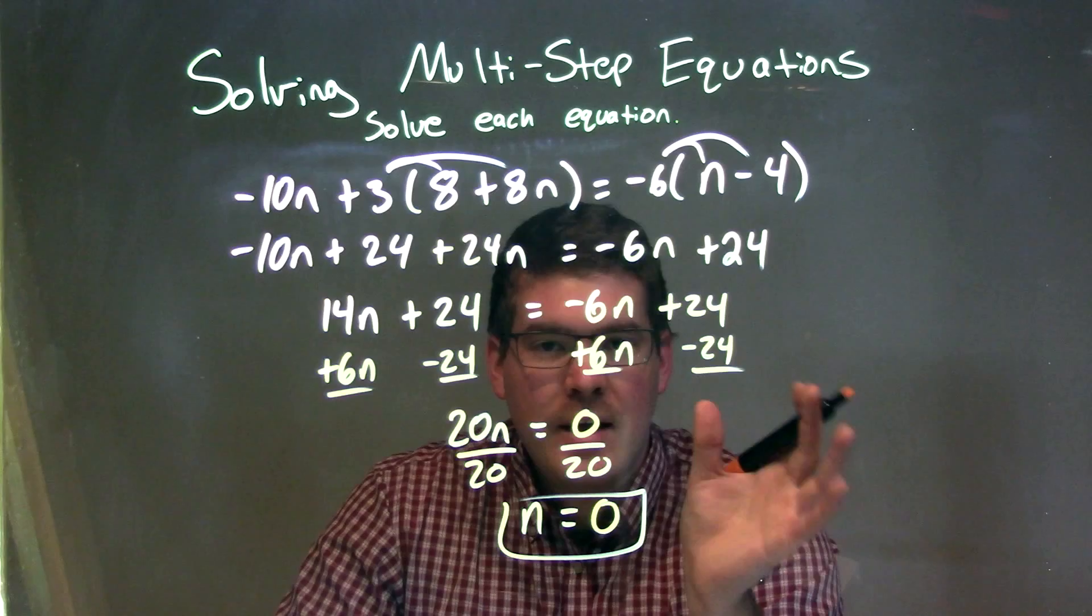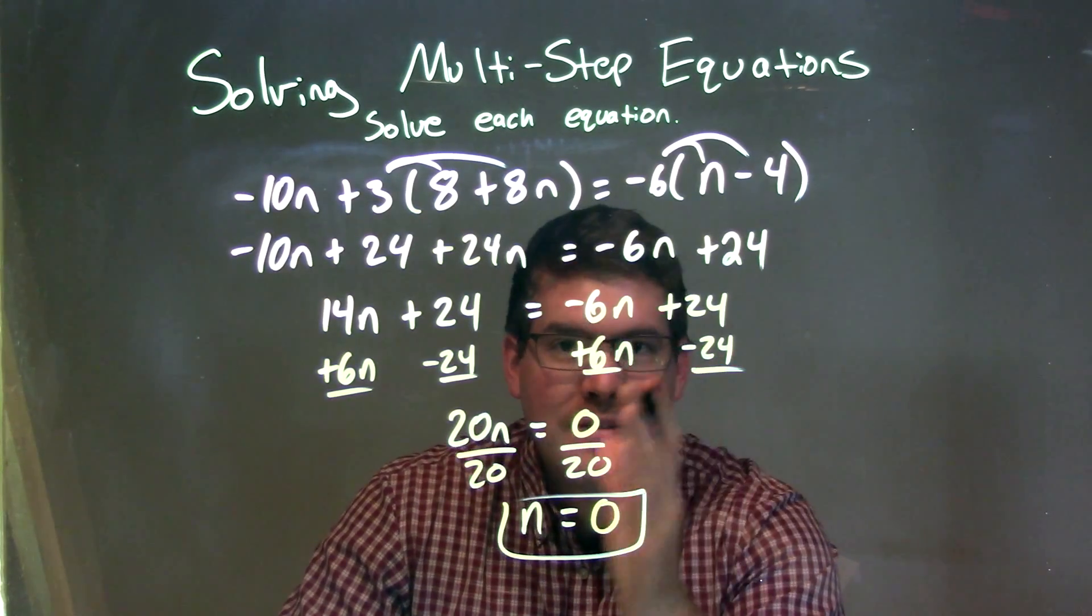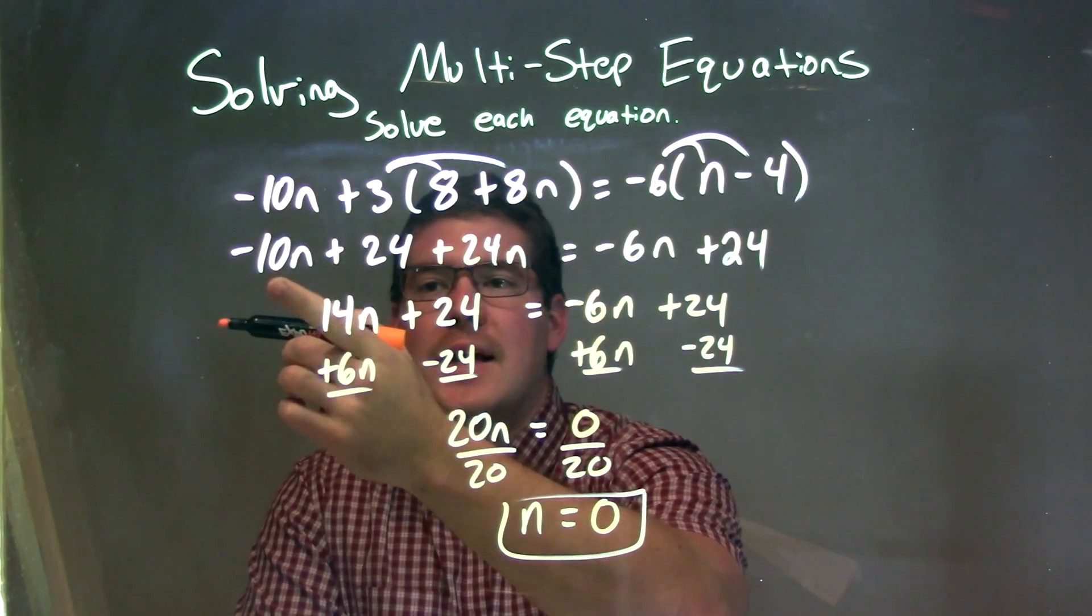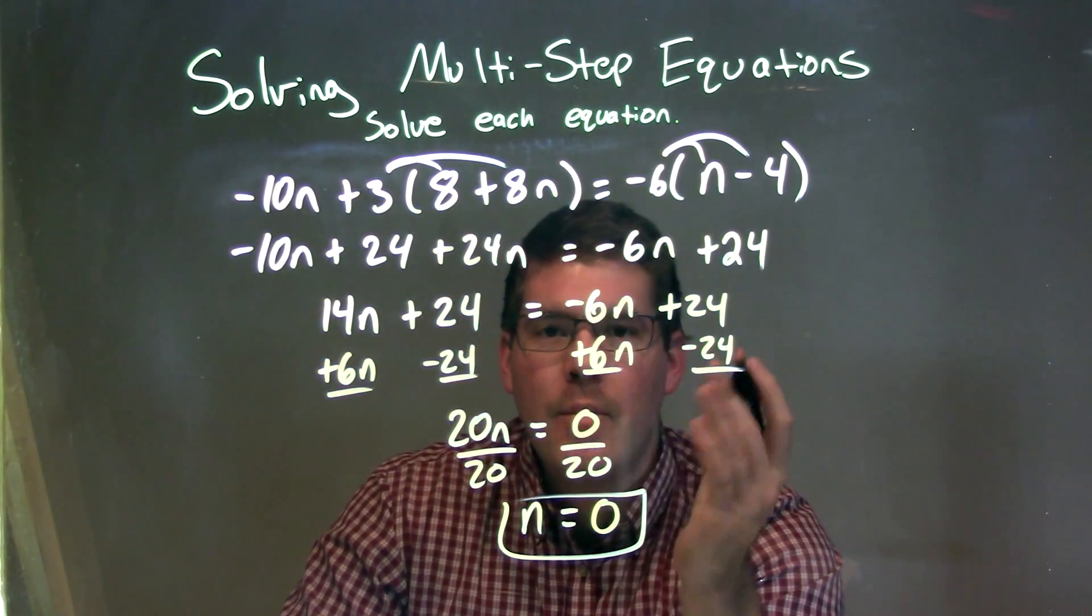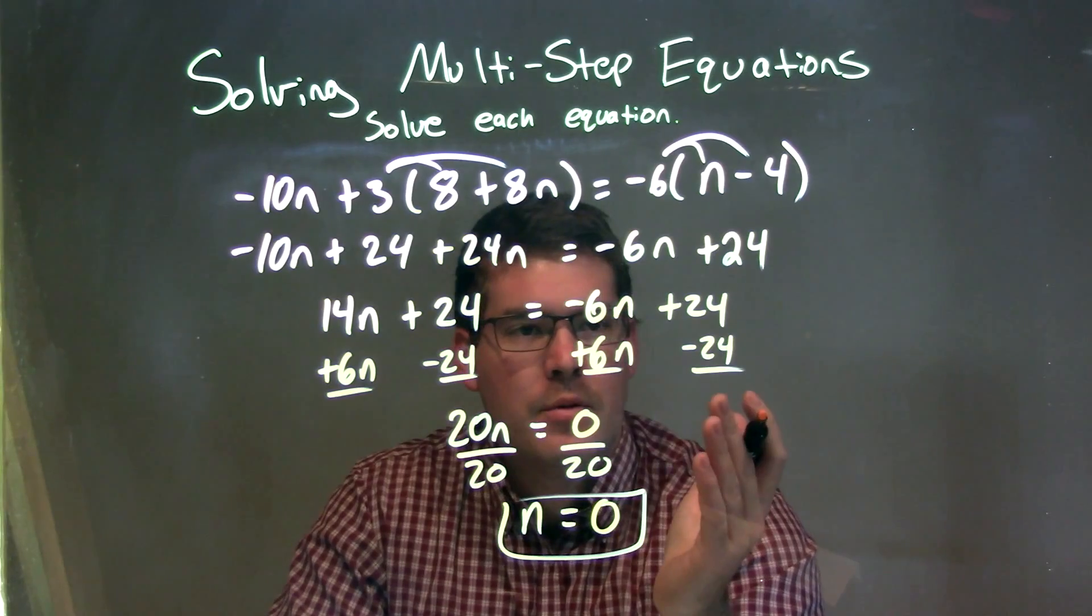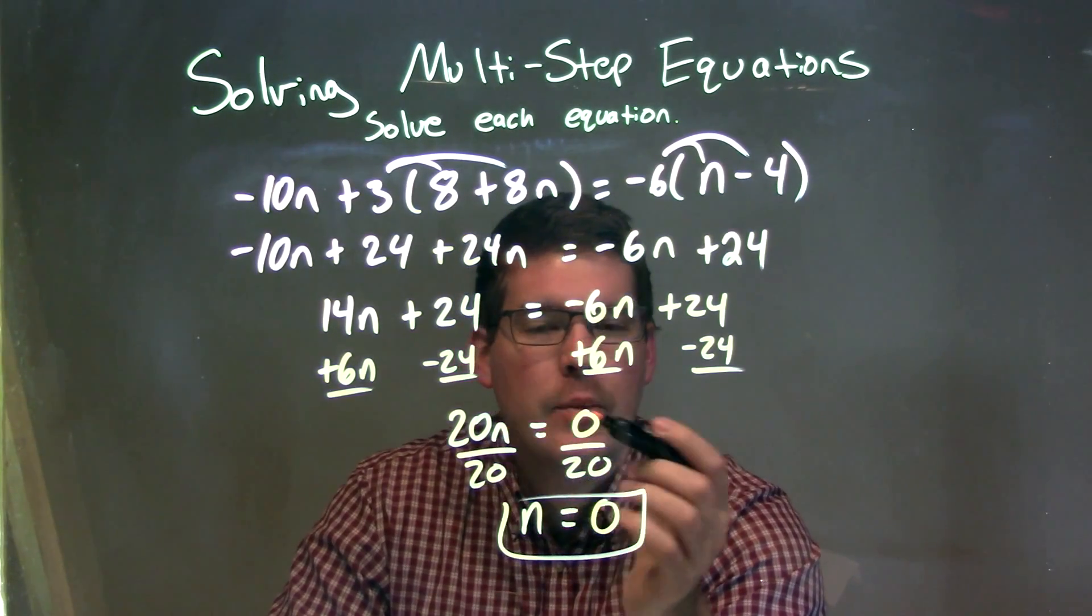From there, I simplified. I combined my like terms that stayed on each side of the equal sign. So the only ones that did that were the -10n and the 24n, which gave me 14n. From there, I brought all my variables to the left and my numbers to the right. That gave me 20n = 0.